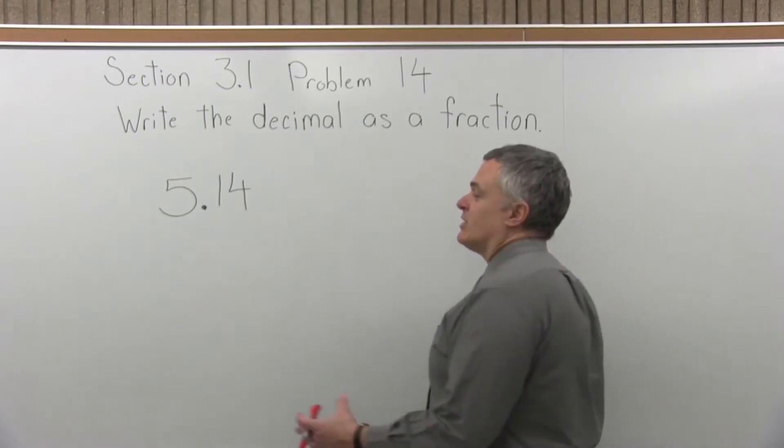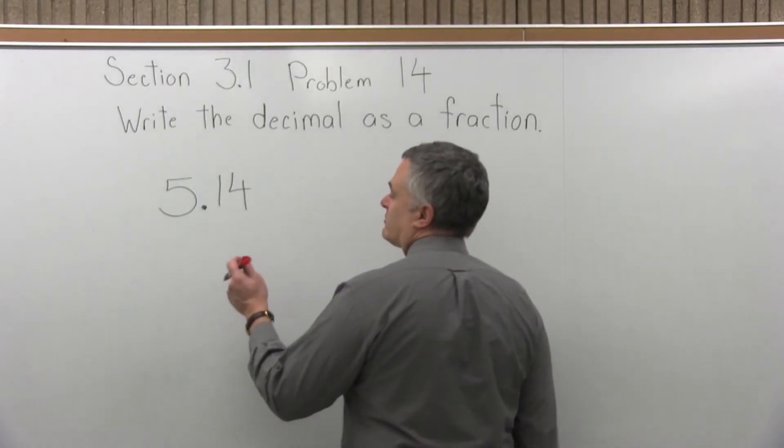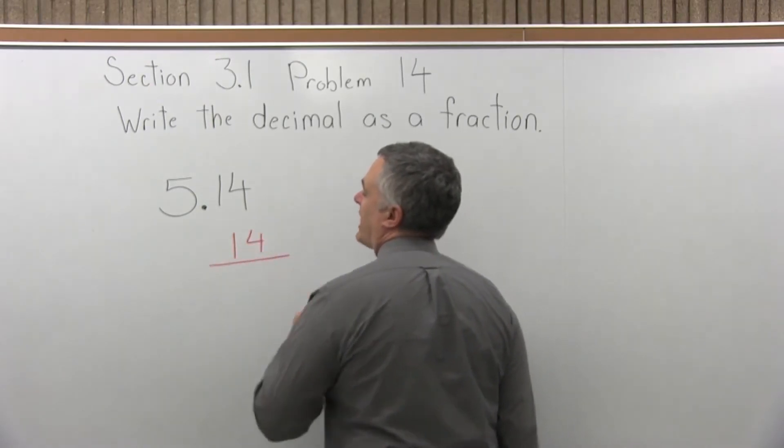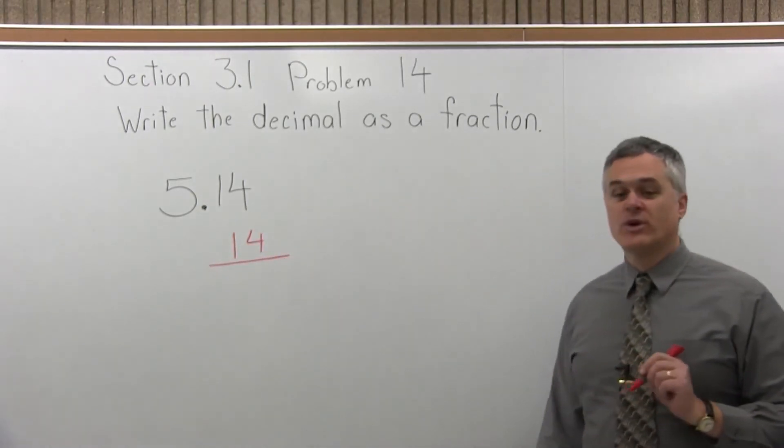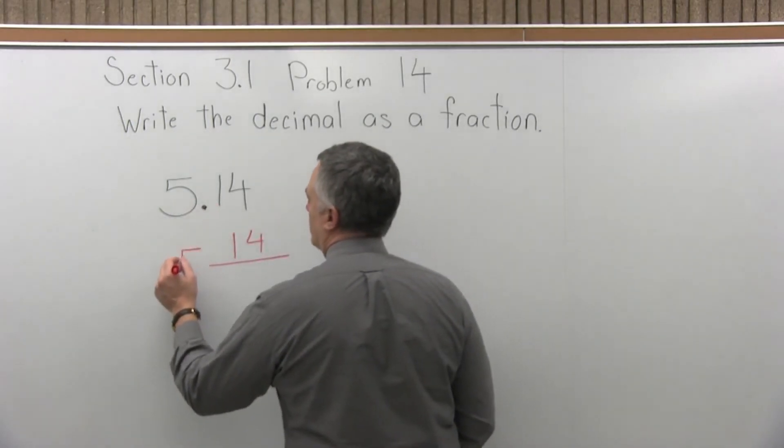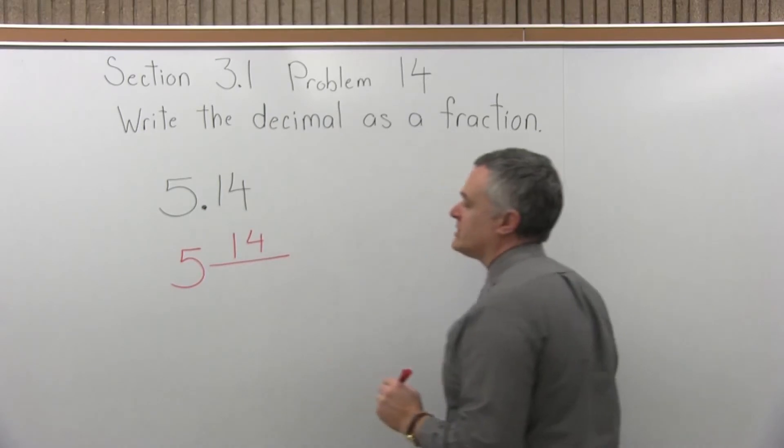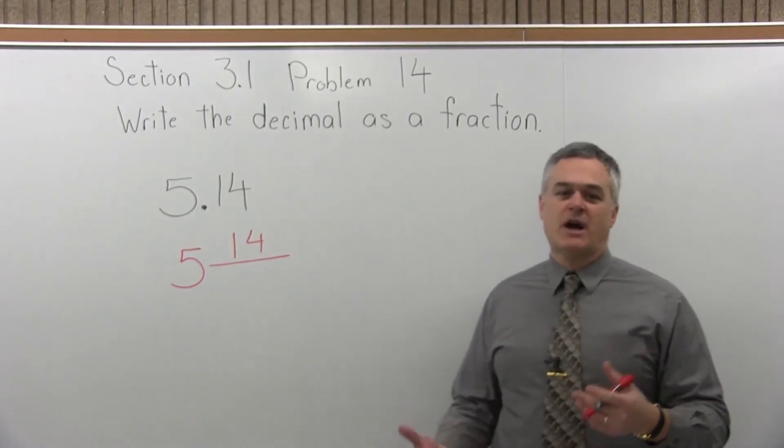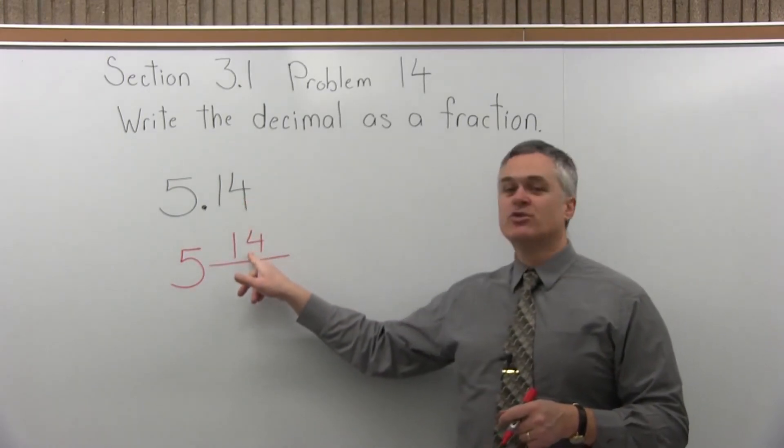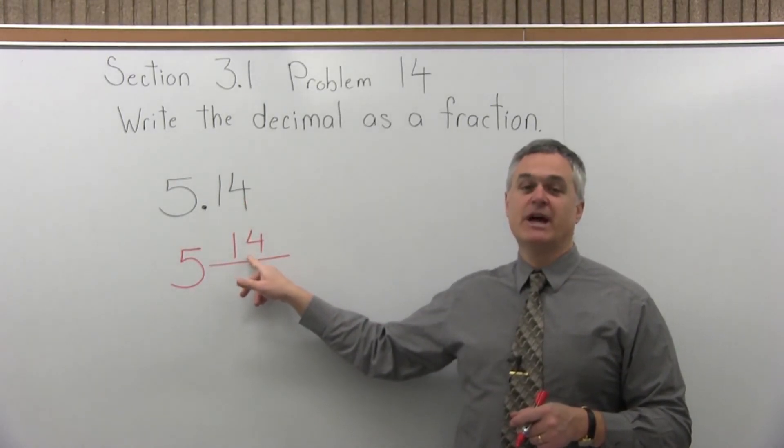So to convert a decimal into a fraction, first what we're going to do is write what comes after the decimal in the numerator of a fraction. So I'm going to put 14 in the numerator of a fraction. Now the 5 in front of the decimal will stay in front of the fraction. Five point something will be 5 and some fraction. Now again, step one, write what comes after the decimal in the numerator of a fraction. So I've done that.